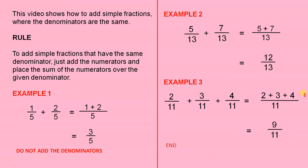Now here's the simple rule. To add simple fractions that have the same denominator, just add the numerators and place the sum of the numerators over the given denominator.